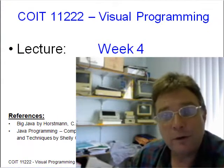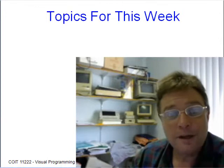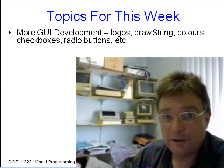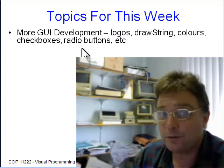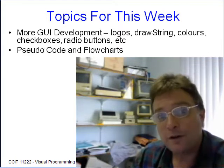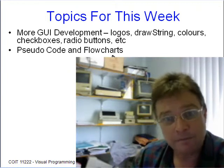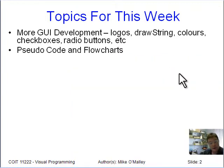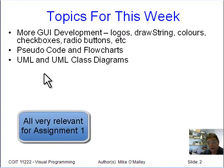Hello and welcome to week four of visual programming. This week we do quite a lot of new material — we look at more GUI development, so we're using logos, the drawstring method, colours, checkboxes, radio buttons and so on. We're also looking at pseudo-code and flowcharts and what they mean and how useful they can be — great tools for helping you develop your applications, especially pseudo-code. We'll also talk briefly about UML and UML class diagrams.